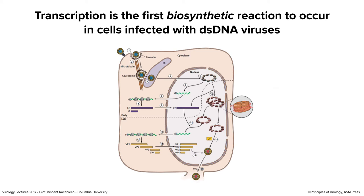Here's an illustration of the life cycle of a polyomavirus. The virus binds a receptor, is taken into the cell, and its double-stranded DNA gets into the nucleus. The first thing that happens is transcription, and mRNA is made. That's the first thing that happens for double-stranded DNA viruses — no matter which one, it has to make an mRNA.